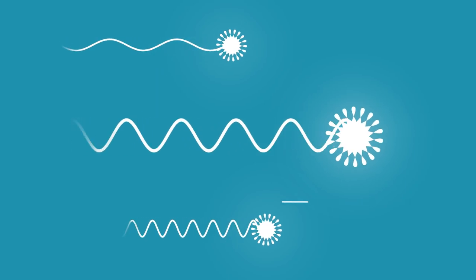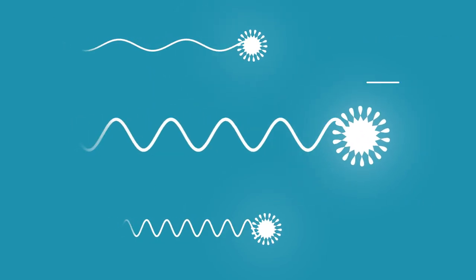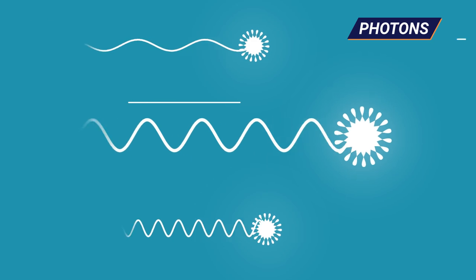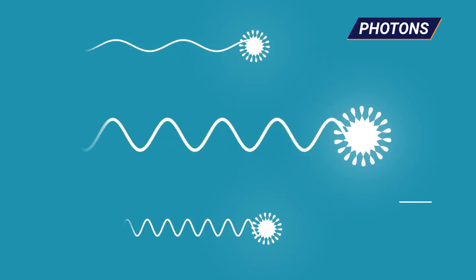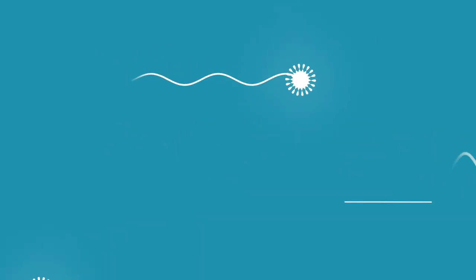Electromagnetic radiation can be described as a stream of particles without a real size, called photons, each travelling in a wave-like pattern in various wavelengths at the speed of light. You may already know more about it than you might think.